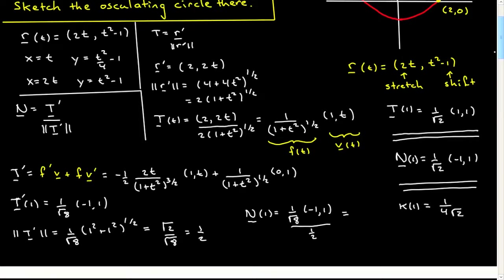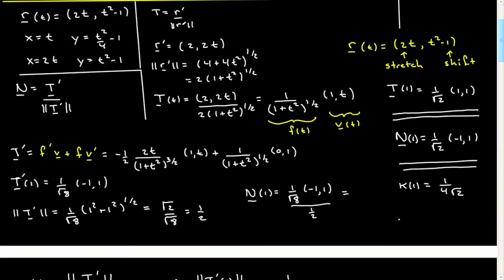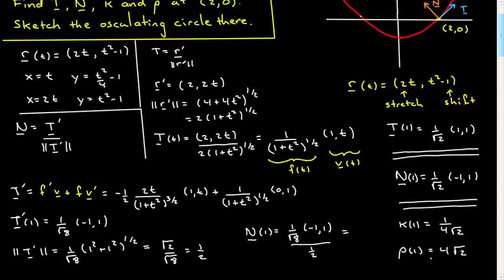and the radius of curvature, rho of 1, is therefore equal to simply the reciprocal of that. There we go. So these then, I'll just underline, are our final two quantities.